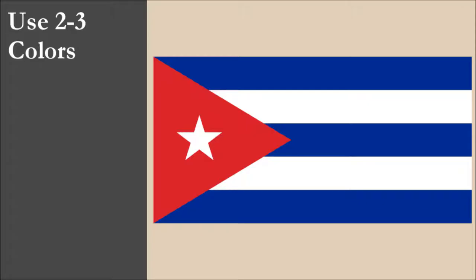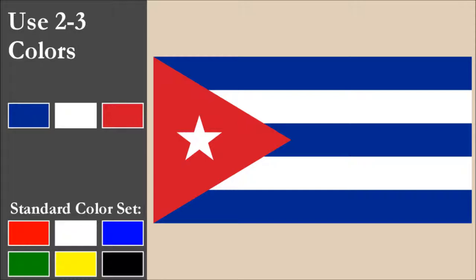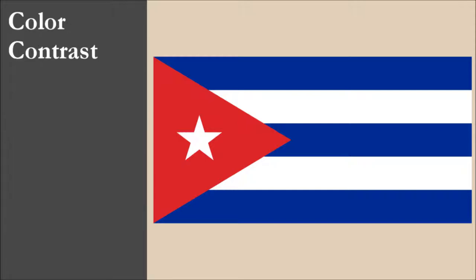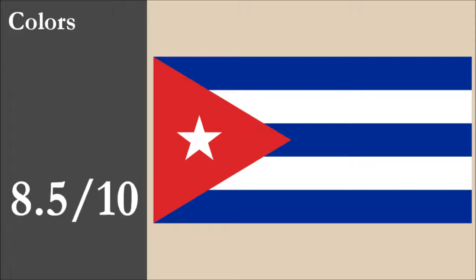The flag has three colors: blue, white, and red. All three colors are part of the standard set. With contrast, we have an issue with the red of the triangle bordering the blue stripes. These two strong colors have poor contrast, though their borders don't take up a large area. Overall for color, the flag scores 8.5 out of 10.